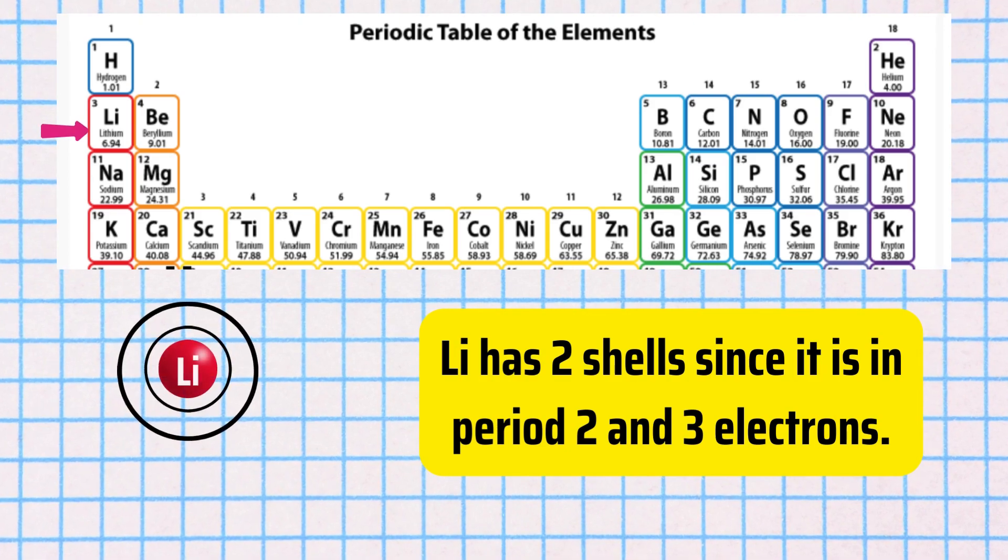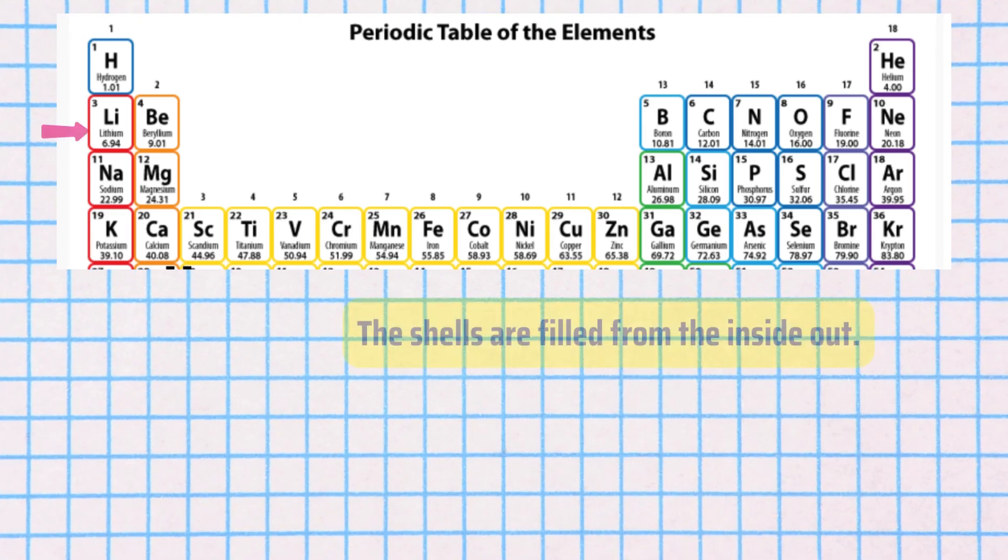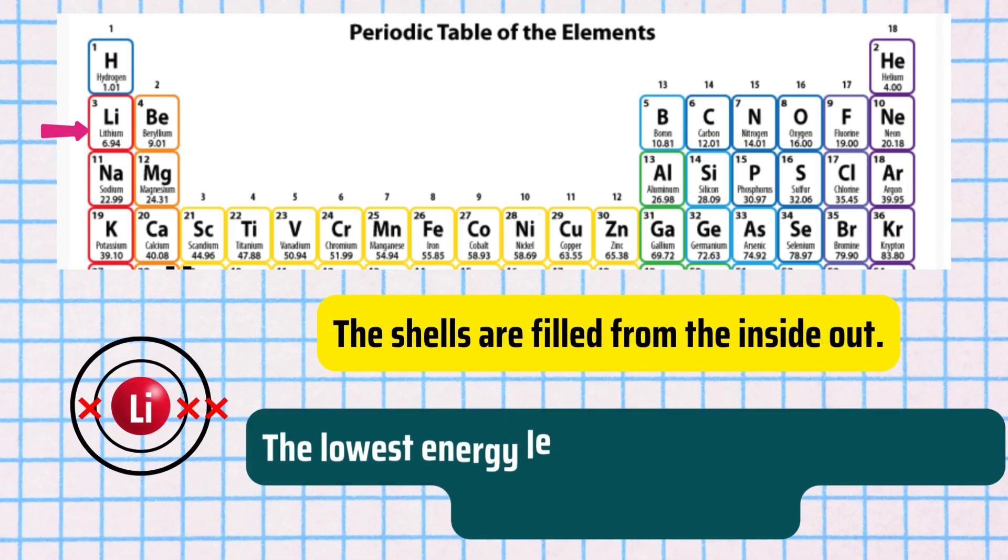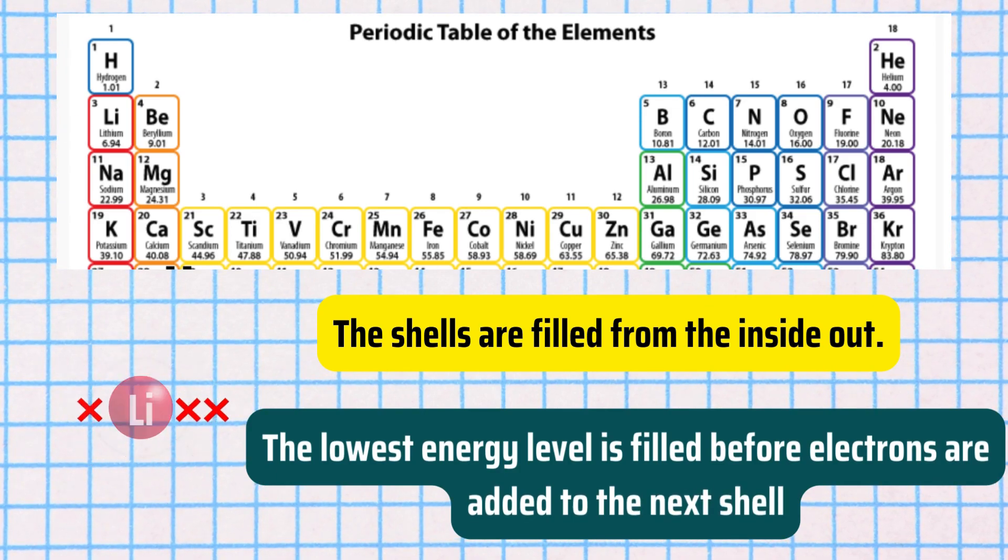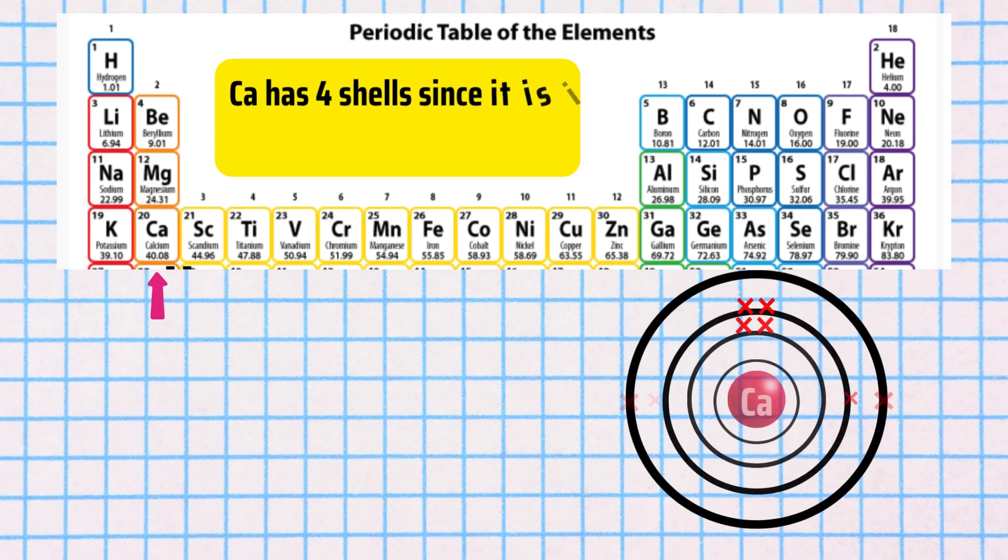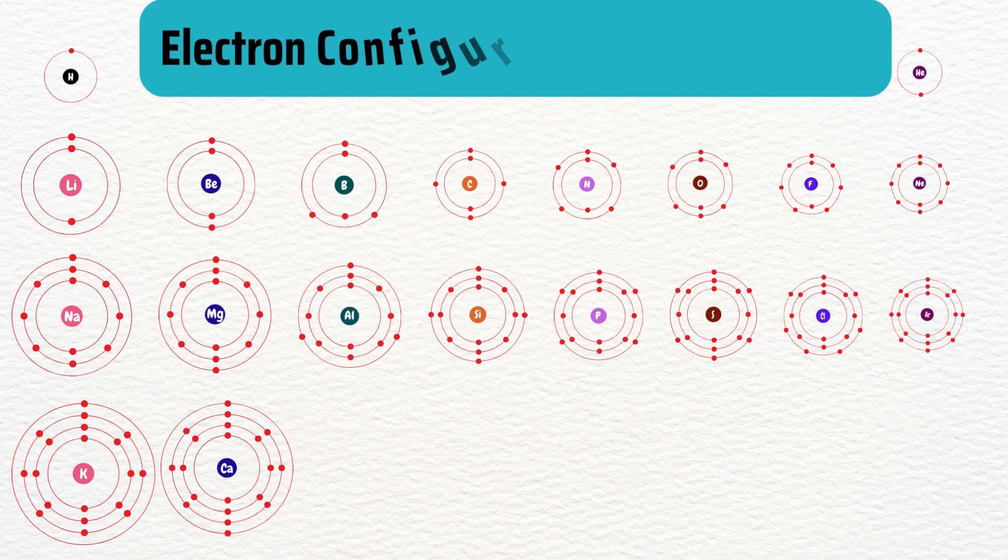Lithium has two shells since it is in period 2 and it has three electrons. The shells are filled from the inside out. In other words, the lowest energy level is filled before electrons are added to the next shell. Calcium has four shells since it is in period 4 and it has 20 electrons. Now repeat this for all other atoms from element number 4 to 19.